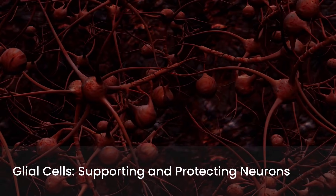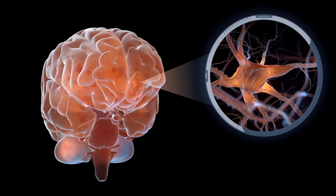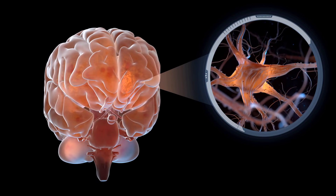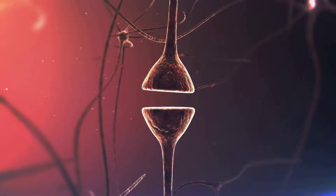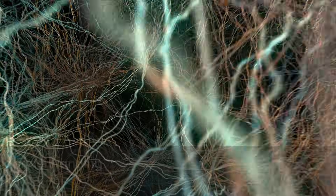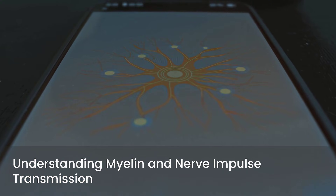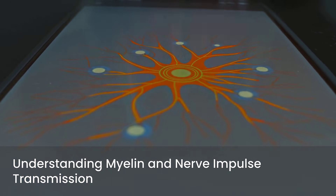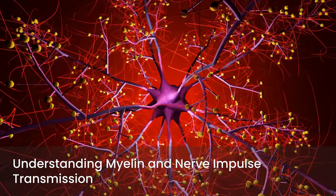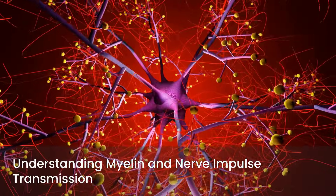Key types of glial cells include astrocytes, oligodendrocytes, microglia, and Schwann cells. Astrocytes provide structural support and regulate the chemical environment. Oligodendrocytes and Schwann cells form myelin sheaths, which are crucial for rapid nerve impulse transmission. Microglia act as the immune cells of the central nervous system. Myelin acts as an electrical insulator, significantly increasing the speed of nerve impulse transmission along axons. Understanding action potentials and the basics of nerve impulse transmission is also vital.